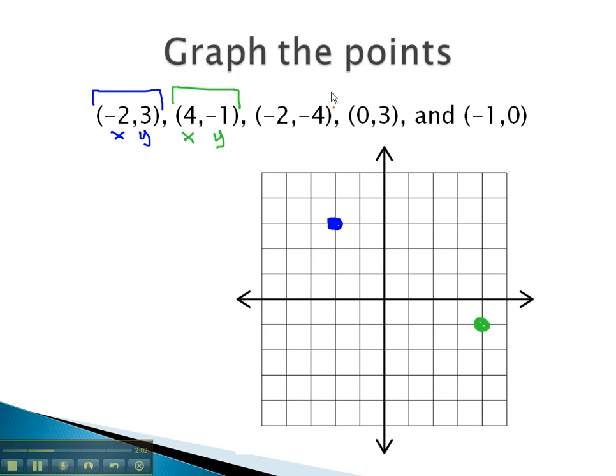The next point is (-2, -4). Negative 2 on the x and negative 4 on the y to get our point.